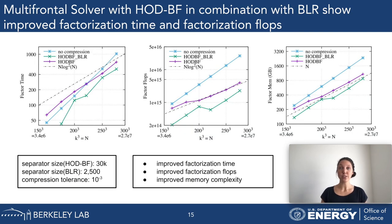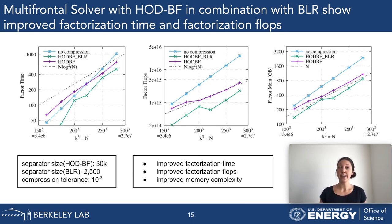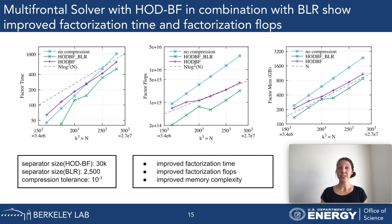This leads to the results shown here. On the left is the factorization time, in the middle the factorization flops, and to the right the factorization memory. The blue line shows no compression, the purple line shows HODBF only, and the green line shows this new hybrid version of HODBF combined with block-low-rank for medium-sized fronts.